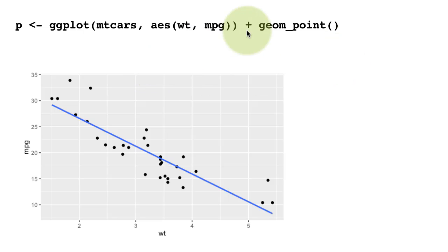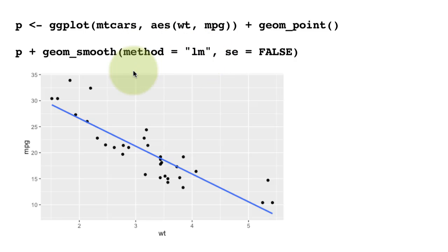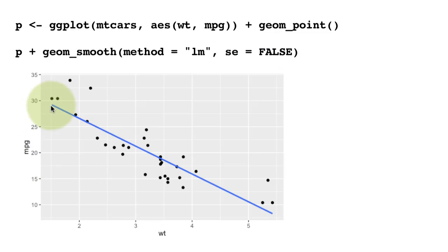Here we draw the linear regression line using geom_smooth with method equals lm. Without specifying the method it uses loess and shows a curved line; specifying method equals lm gives the straight linear regression line. You can put lm in quotes or without quotes — both work. We also set se equals FALSE to suppress the gray confidence interval bands around the line.